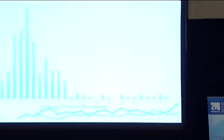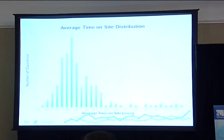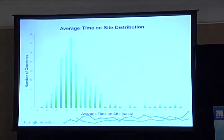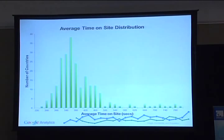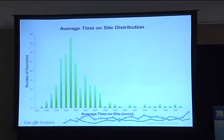Average time on site of the world. Again, on the left side, number of countries — it's a histogram. On the bottom, average time on site. All the way at the bottom, we've got about 220 seconds. The average is about 360 seconds, or five minutes. And all the way on the end, we've got 760 seconds, which is about 12 minutes.